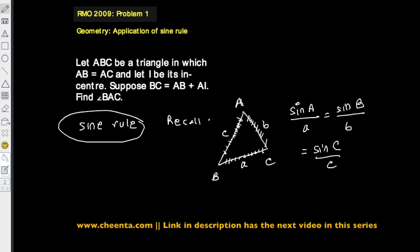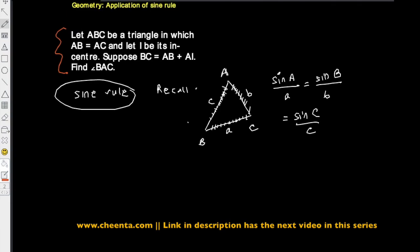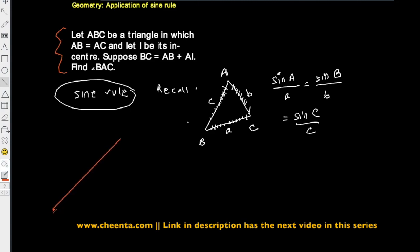This rule is very handy whenever you have a triangle and you want to find out some information about angles from the sides. So let's show an example. This is a problem from the Indian Mathematics Olympiad, and it can be done without using trigonometry at all, but we will do this using trigonometry just for the fun of it.